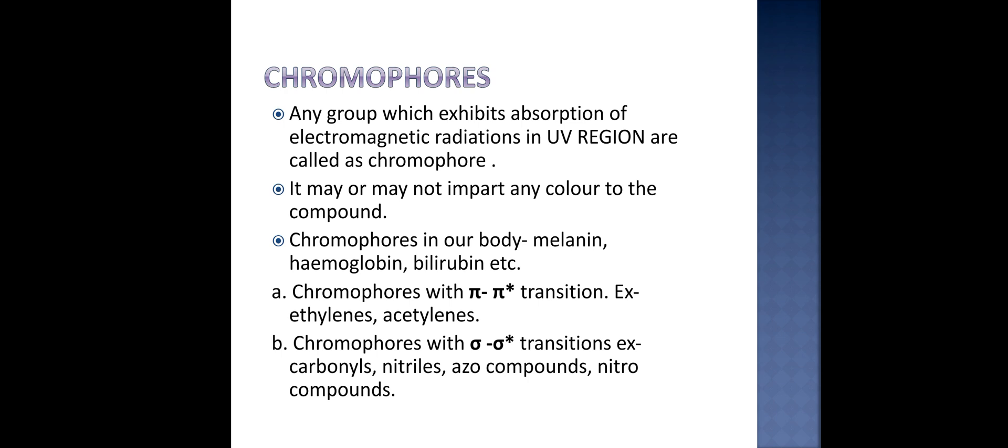Chromophores with π to π* transition include ethylene and acetylene. Chromophores with σ to σ* anti-bonding orbital transitions are carbonyls, nitrile compounds, and nitro compounds.